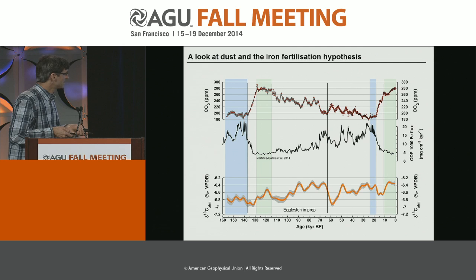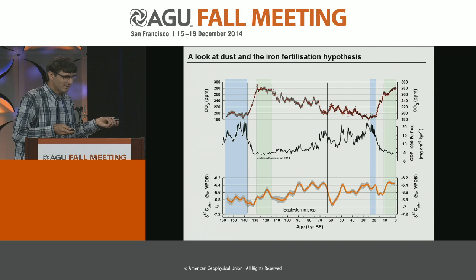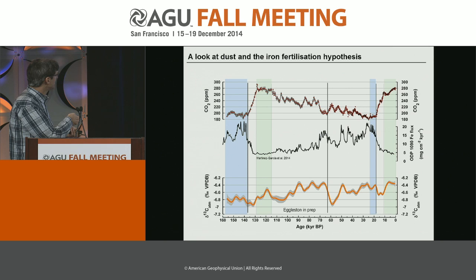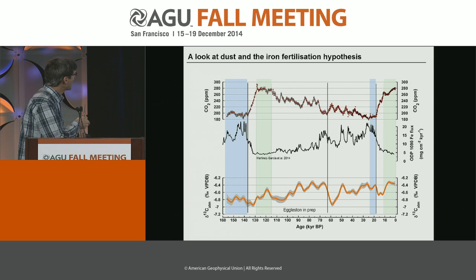If you align the records — and I know it's not really convincing just to do wiggly matching — you see that when CO2 rises, the dust is dropping rapidly and you get a drop in carbon isotopes. At termination two, CO2 rises and the dust drop is just in the middle, giving something different. During another interval, dust is dropping, CO2 is rising, and you get a huge drop.